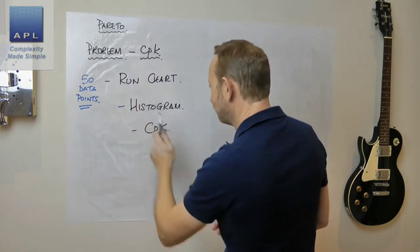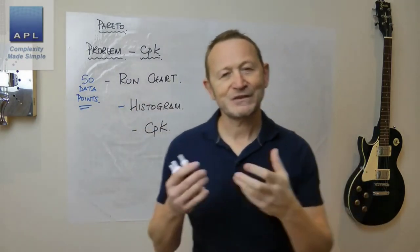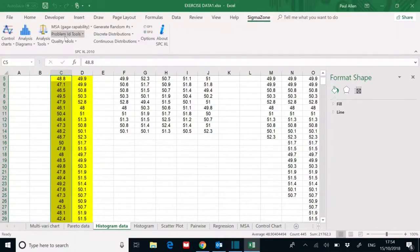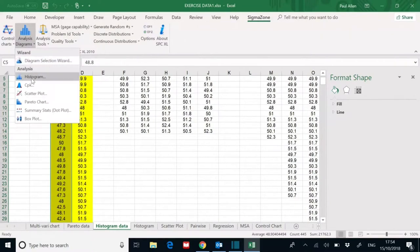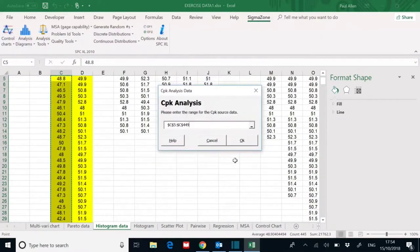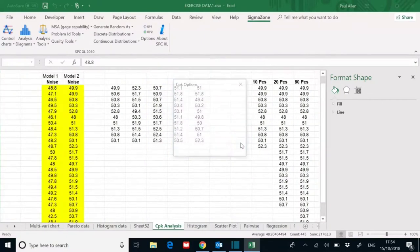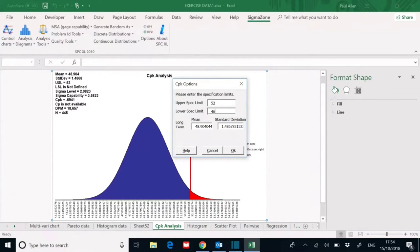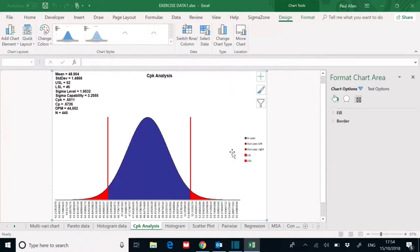The next tool is the CPK diagram. We've gone run chart, histogram, CPK. What's this going to do? It predicts the true defect rate - not an observed defect rate. I'm going to generate a CPK for that data set, and you can see the defect rate: 44,000 defects in a million.